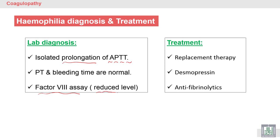In hemophilia A, Factor 8 will be found at a reduced level. Other laboratory tests will be normal: PT, which tests the extrinsic pathway, will be normal, and bleeding time, which tests the vessel and platelets, will also be normal. Treatment is replacement therapy using Factor 8.